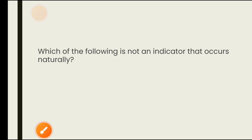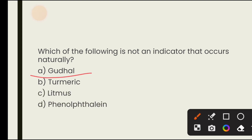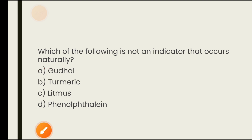Which of the following is not an indicator that occurs naturally? Options are gudhal (China rose), turmeric, litmus, phenolphthalein. China rose, turmeric, and litmus paper are all natural indicators. Phenolphthalein, however, is an artificial indicator that is not naturally found in the atmosphere. The answer is D — phenolphthalein.